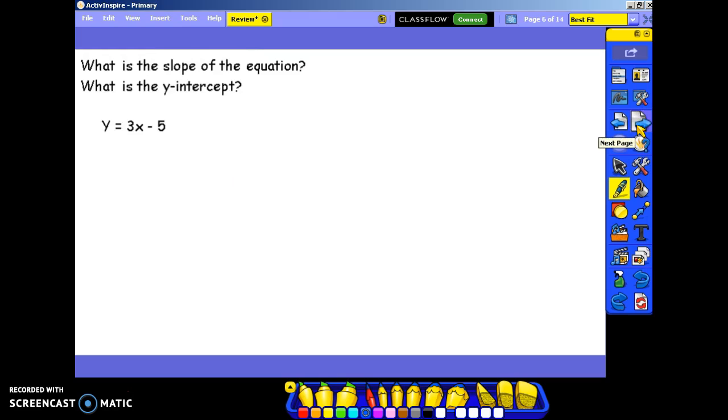Our next one, what is the slope of the equation and what is the y-intercept? In y equals mx plus b, m is your slope, b is your y-intercept. So in this equation, 3 is our slope. Negative 5 is our y-intercept. So m is 3, b is negative 5.